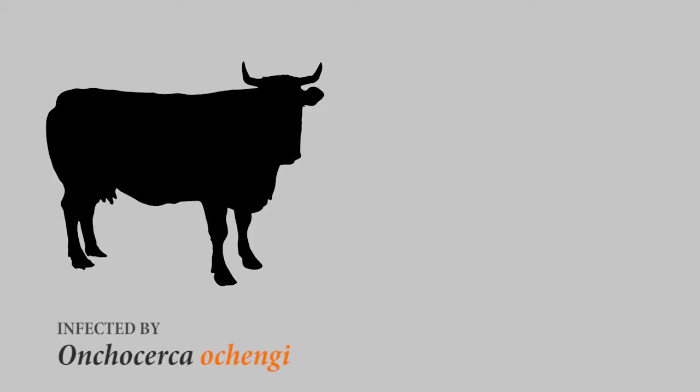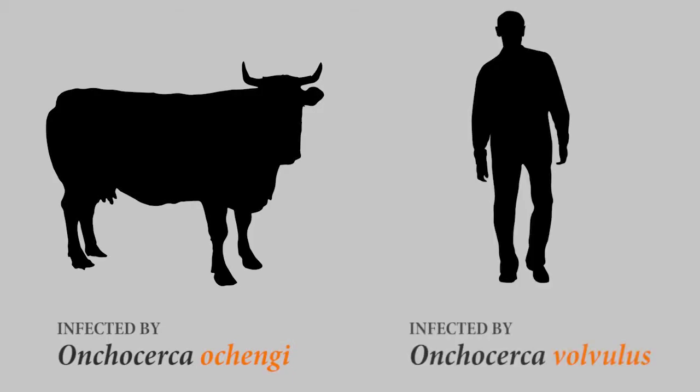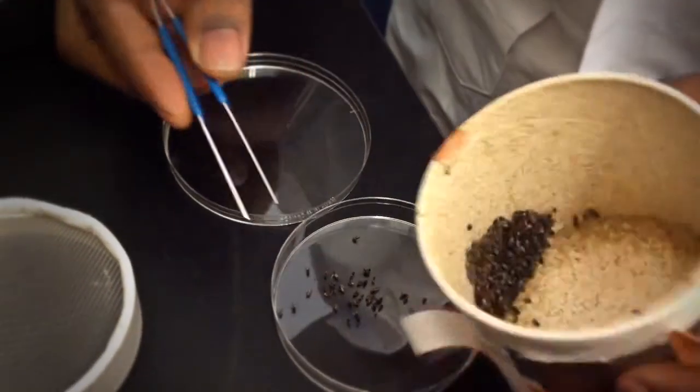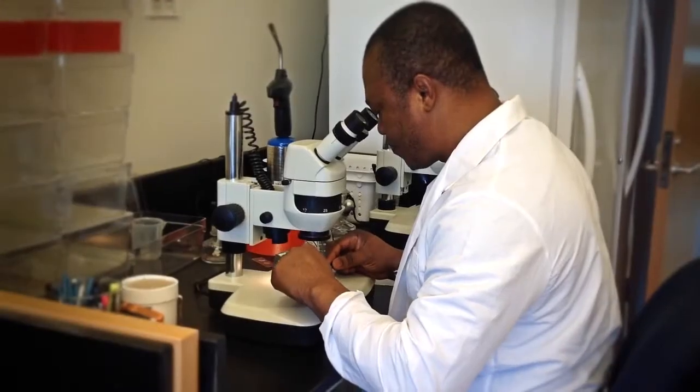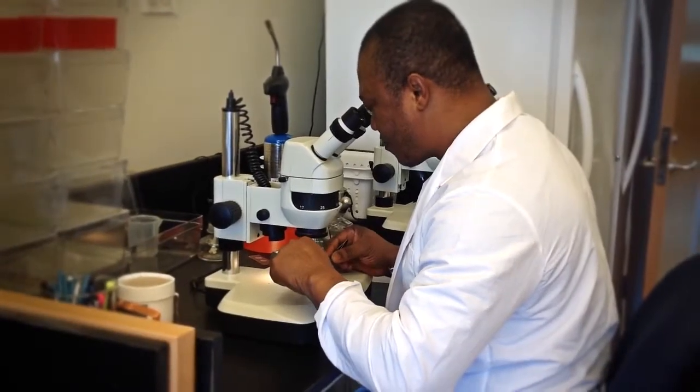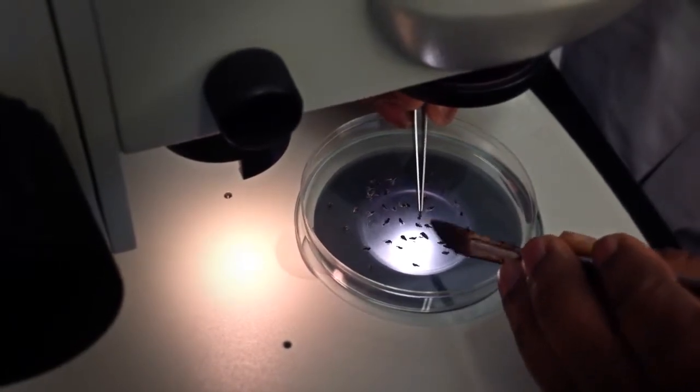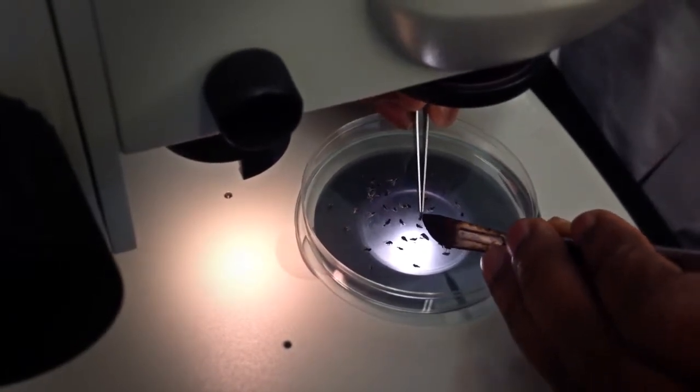We also have PCR techniques which are used to detect parasite DNA in these flies. However, the cattle parasite and the human parasite are so closely related that the PCR biomarker used cannot differentiate between the two. Hence, there has been a need for a proper method that can differentiate these two parasites.